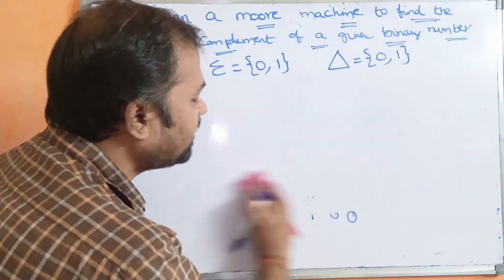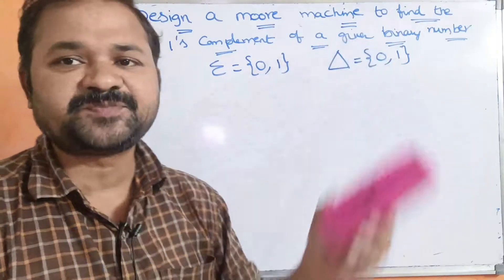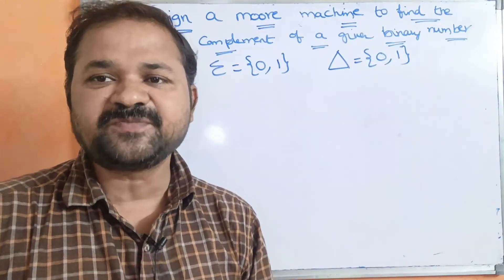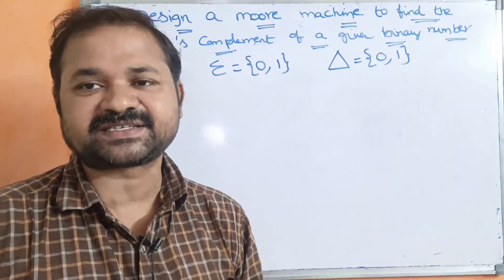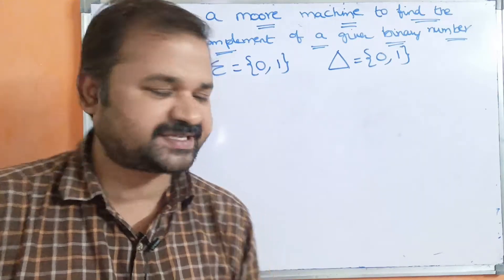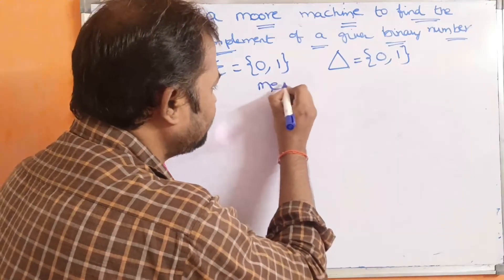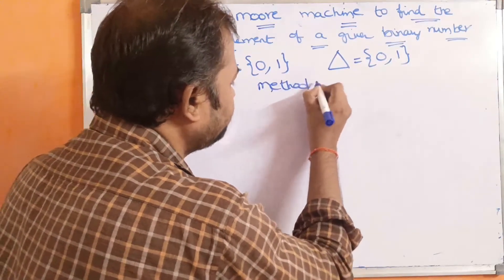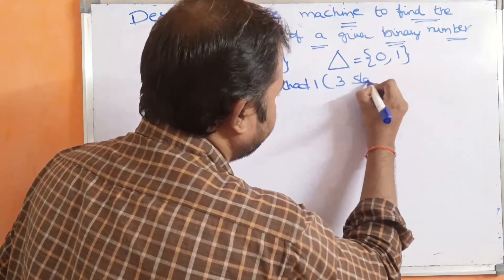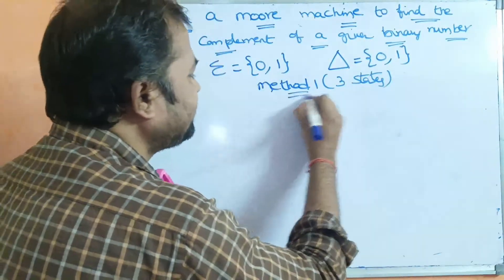Now let us design the Moore machine. We can solve this problem using two methods. The first method is by taking 3 states, and the second method is by taking 2 states. Let us solve the problem using both methods. So Method 1 is by considering 3 states.